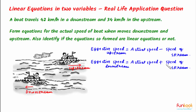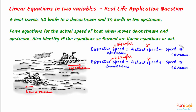We are given that effective speed upstream is 34 km per hour, and effective speed downstream is 42 km per hour. We take the actual speed of the boat as Y, and the speed of the stream as X. These variables apply to both the upstream and downstream cases.